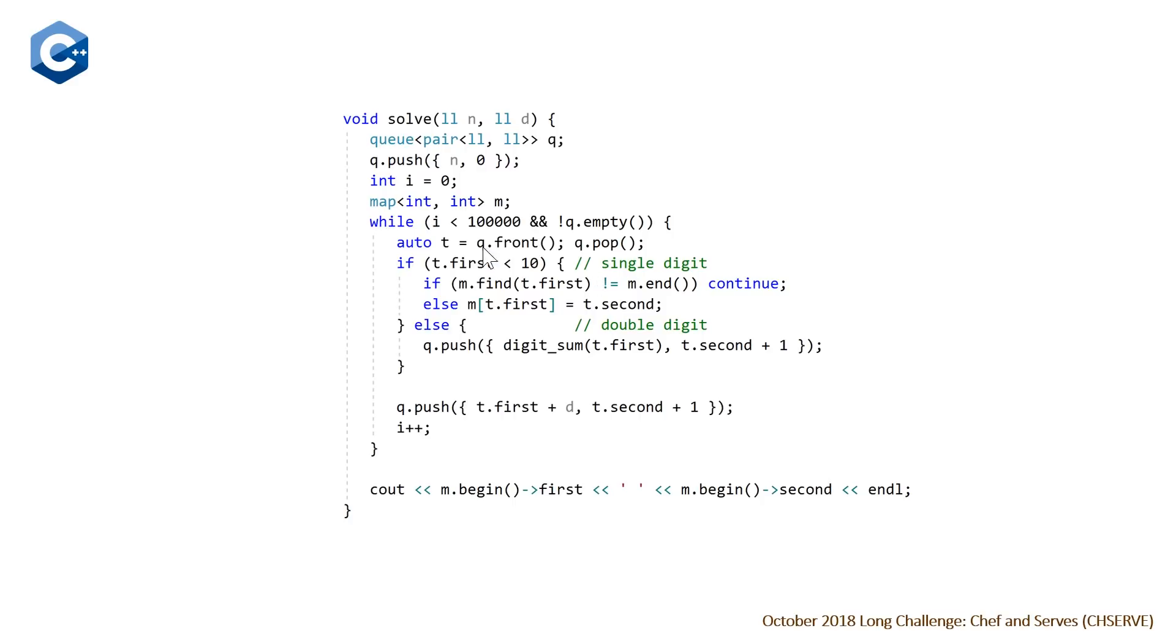So coming back to why we have this i less than 100,000. So if you go back to the constraints of this problem, we have that we only have 10 test cases. And if you recall from previous videos that I've mentioned this in, typically the way the problems work is that you have a time limit. And the rule of thumb is that you're allowed 10 to the 8 operations per second. And this problem has a one second time limit. So that means that we have 10 to the 8 operations. So if we have 10 test cases, that means per test case, we roughly have 10 to the 7 operations we can do.